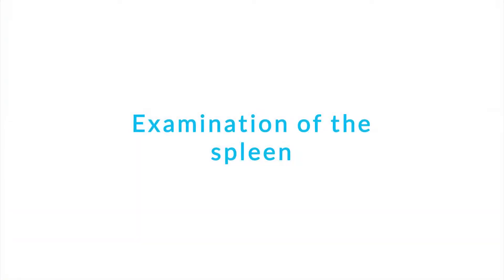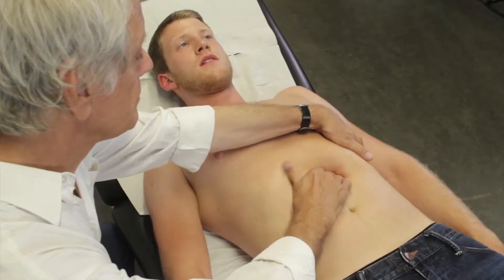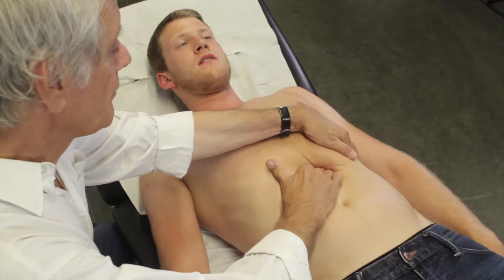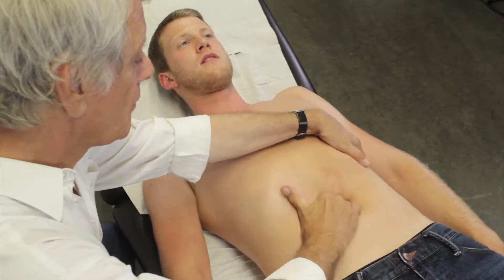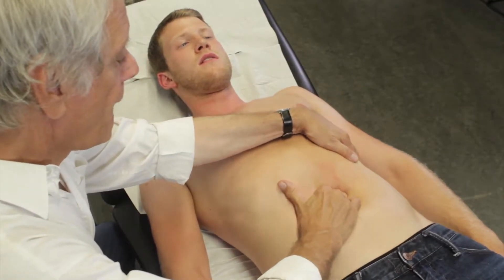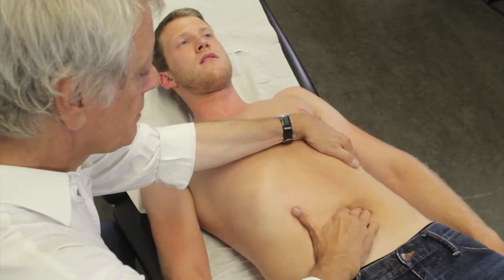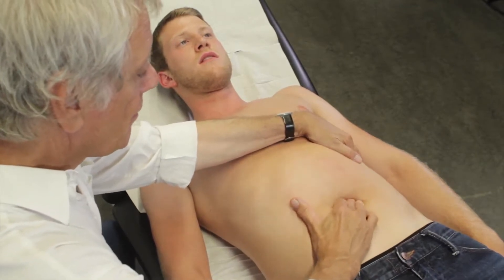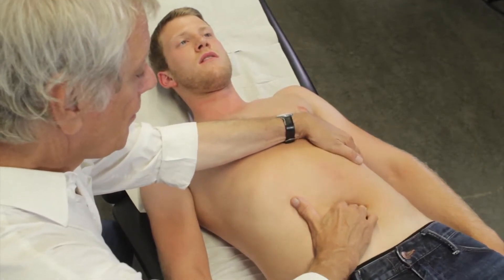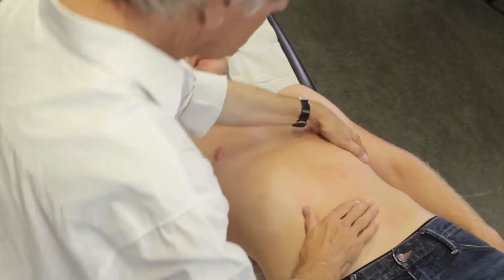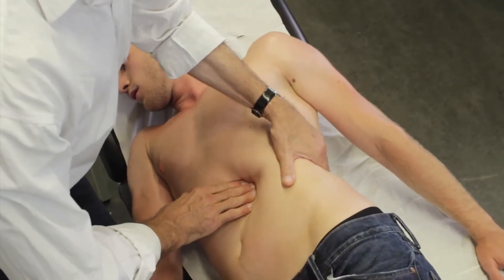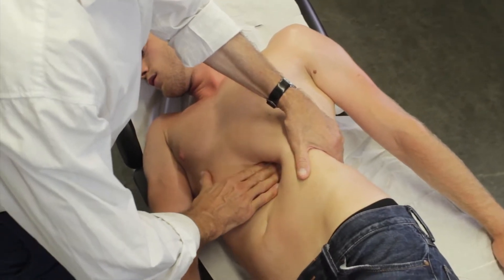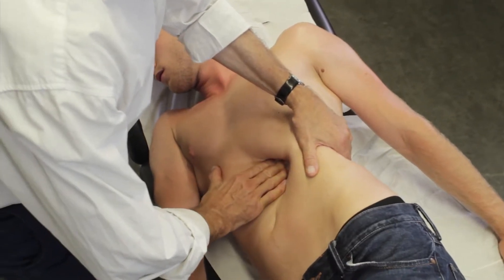The spleen is generally not palpable in healthy adults. A pathologically enlarged spleen is palpated under the left costal margin during inspiration as the inferior edge descends to the examiner's fingertips. If an enlarged spleen is already suspected, palpation should begin further down. The examination may be facilitated by gently lifting the left flank of the patient ventrally.